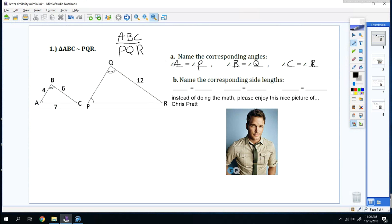It says name the corresponding side lengths. So side length AB corresponds to side length PQ. Side length BC corresponds to QR. And AC corresponds to PR.